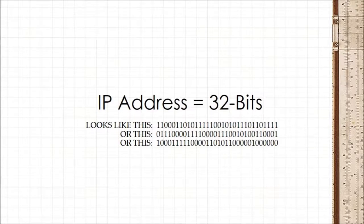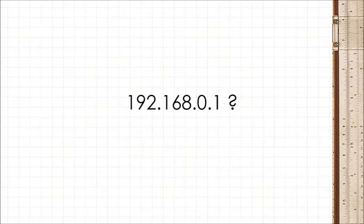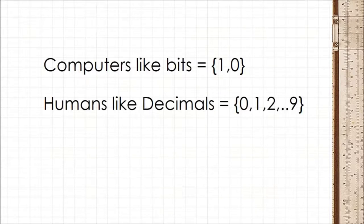But hang on a minute, aren't IP addresses denoted by phone numbers and dots? Yes they are. You see, while computers deal with ones and zeros, humans prefer regular decimal digits from 0 to 9.